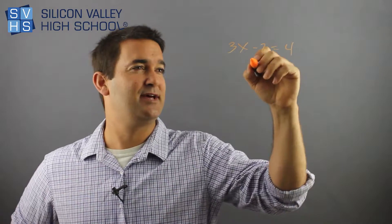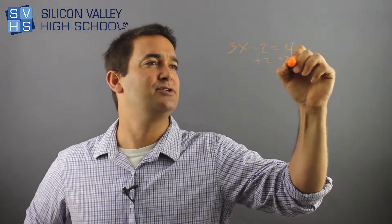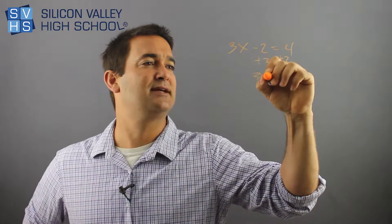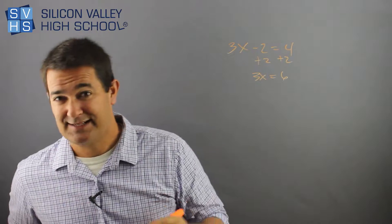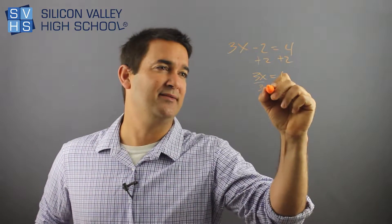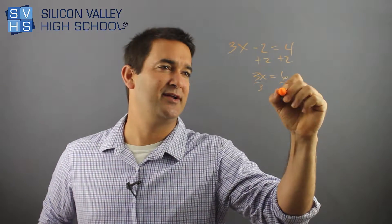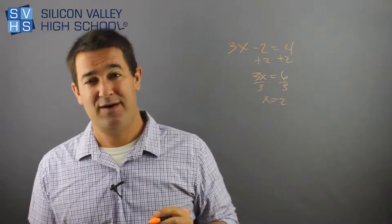you'd say, plus 2, plus 2 — so 3x equals 6. How do I get x alone? I'm going to divide both sides by 3. There you go: x equals 2.